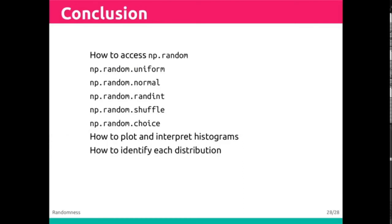In conclusion, what you need to take away from this lesson is how to access numpy.random, the basic tools and distributions, uniform, normal, and randint, and the tools shuffle and choice.